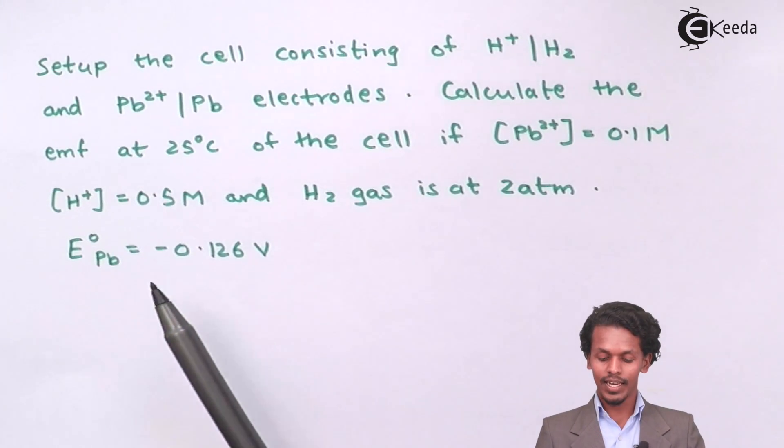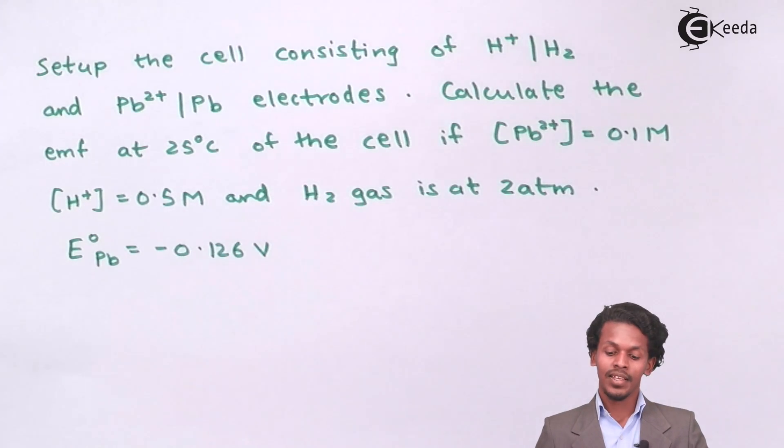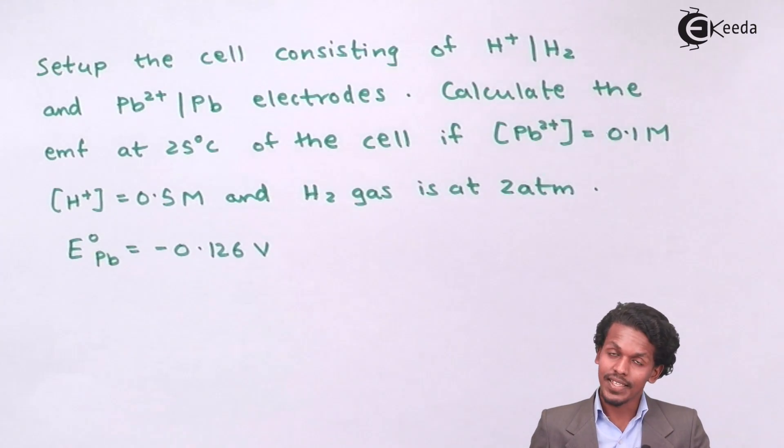The E° of Pb, that is the standard EMF of the lead electrode, is calculated as minus 0.126 volt. Such data has been given and we have to calculate what would be the EMF of the cell.